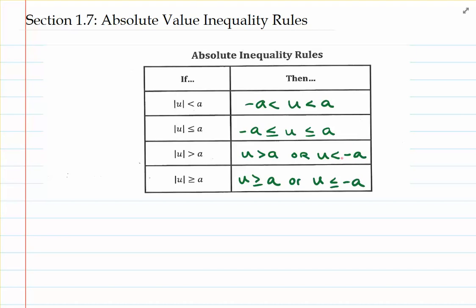I want to reiterate the fact that there are two major changes when you're working with an absolute value inequality involving greater than. That second inequality: the symbol switches or reverses, and also we change the sign of the value of a that we started out with.